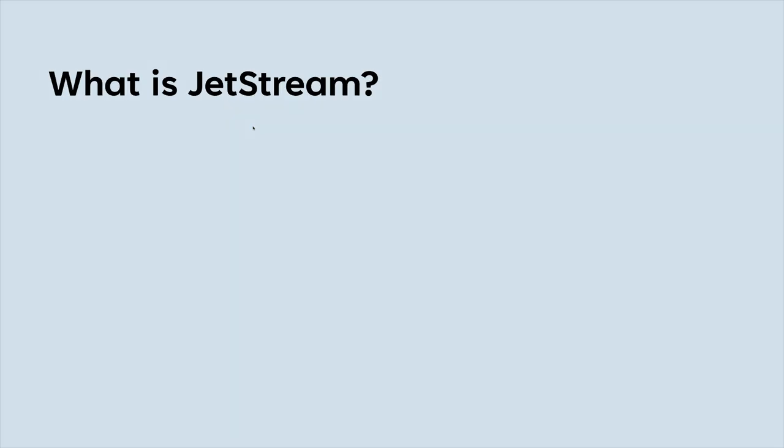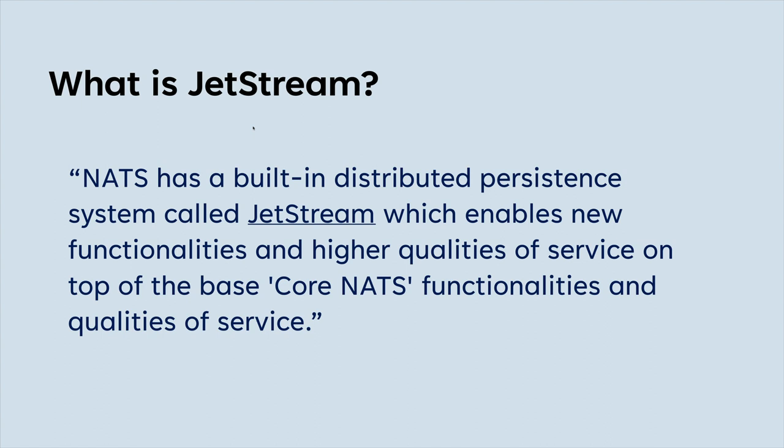So what is JetStream? According to the NATS documentation: NATS has a built-in distributed persistent system called JetStream which enables new functionality and higher quality of service on top of the base Core NATS functionalities. So if we take that apart — what we've been doing so far is having clients subscribe to a topic for messages and clients publish messages to a subject. That is the Core NATS functionality, and there we saw there's no way to really save your messages at all.